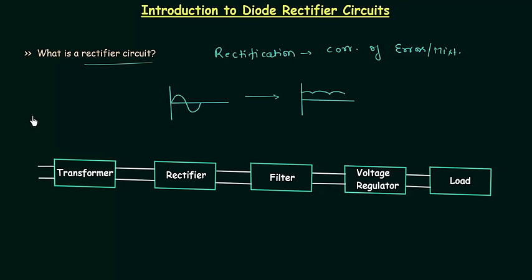The next thing is the stages of DC power supply. There are five blocks in this model. The first block is transformer, the second block is rectifier, the third block is filter, the fourth block is voltage regulator, and the last block is load.